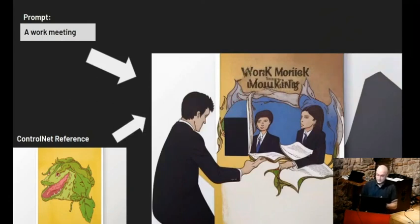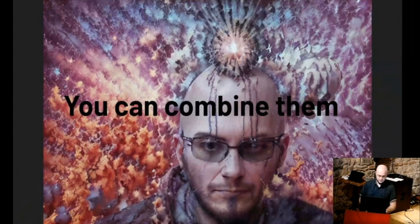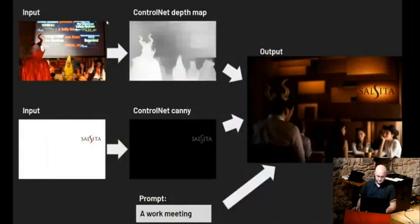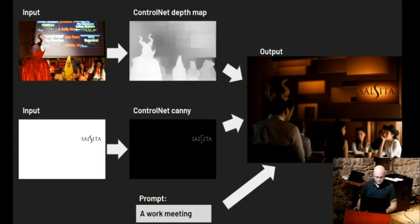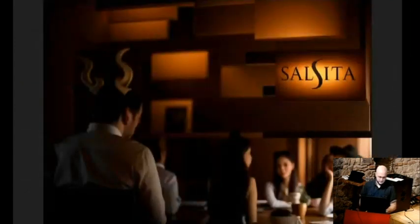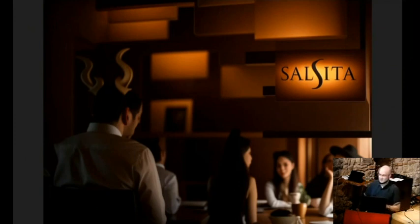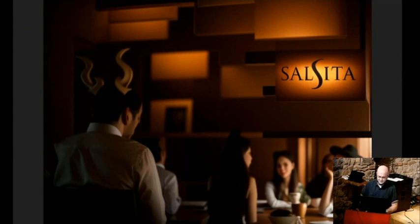You can combine multiple ControlNets at the same time. I took the depth map and the Canny edge one together, and it generated an image with the same composition — a work meeting again. It took the edges from the bottom image and the depth from the top and combined them. You can even put text and logos into images this way — it's a bit forced and I'd need to tune the parameters more, but it works.